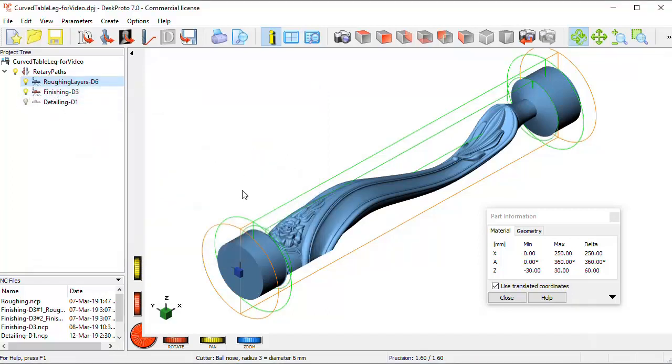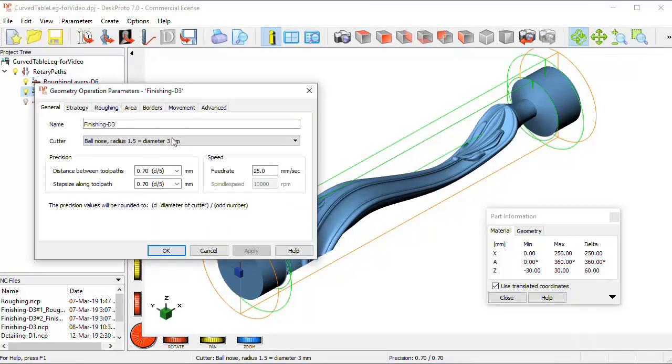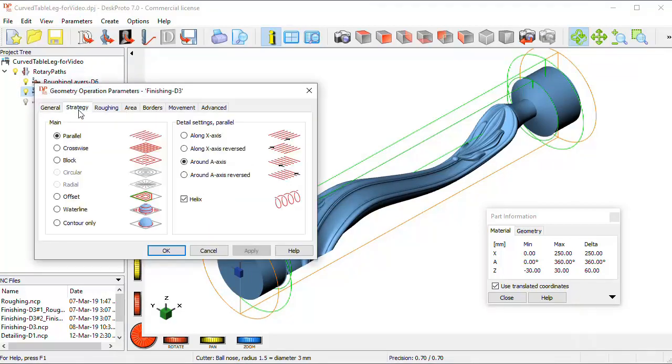For finishing, the area still is a bit smaller. We have a smaller cutter, a 3 mm ball-nose. Now we use a helix operation. For roughing with all the layers the helix doesn't work, but for finishing it does.